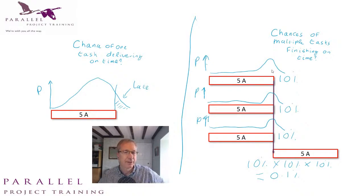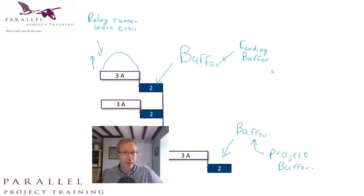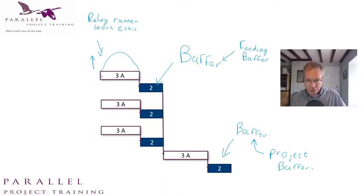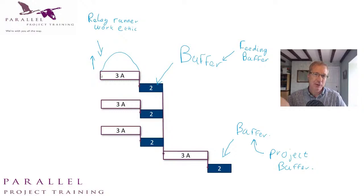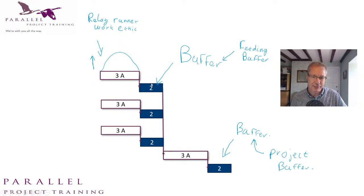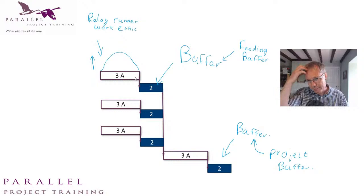What they did with critical chain is ask: how can we compensate for this behavior? The key part that makes the difference is they talked about a new culture called a relay runner work ethic. If I give you a piece of work on Monday and it's critical, when do you start? On Monday. And when do you finish? When you're done with it — it's called baton passing. They say: I know you could get it done in five days, but we're going to take two days off and give you a three-day target.